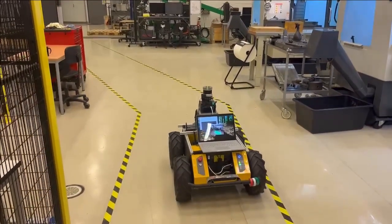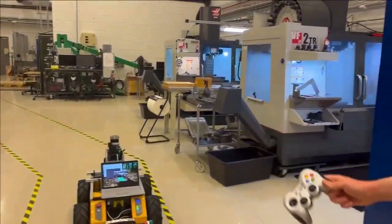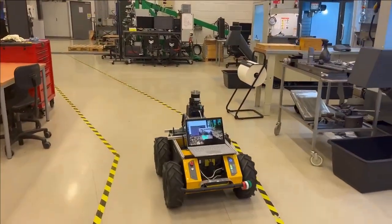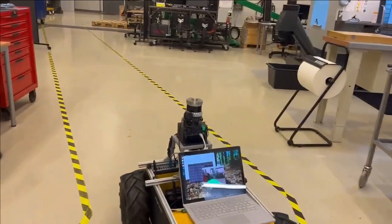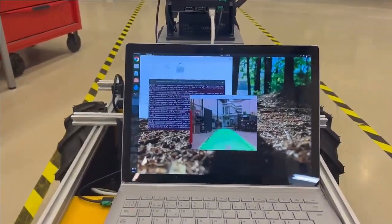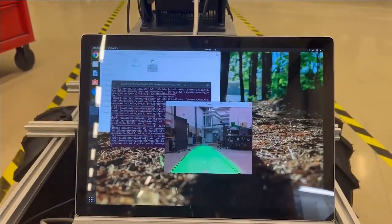The lane detection system is running. We're not controlling the robot now - it's driving by itself following the lanes that it detects in the video. You can see the green area.